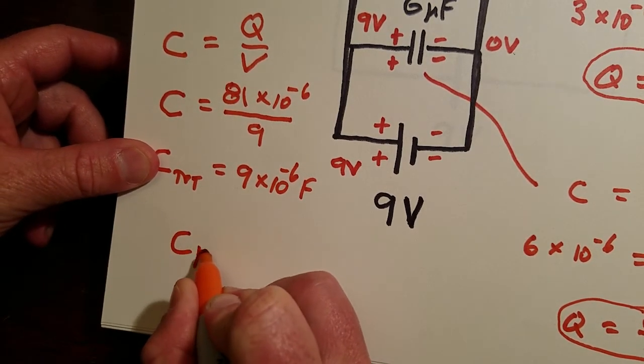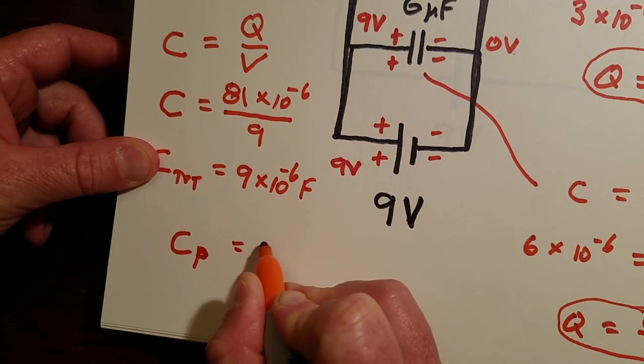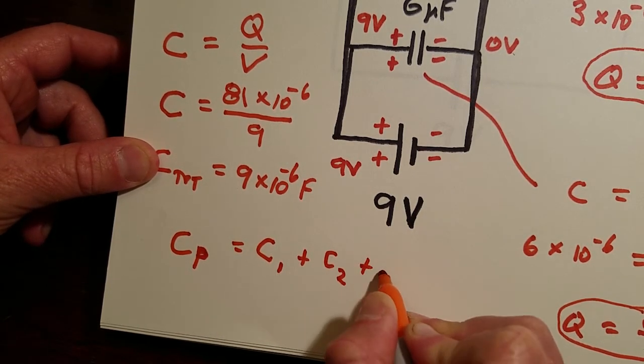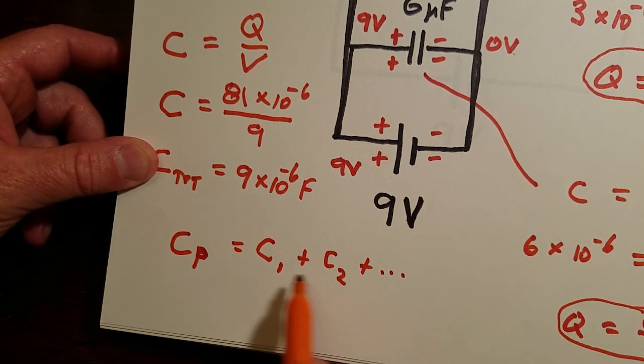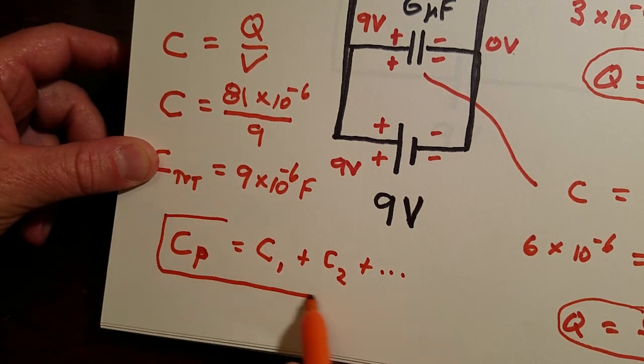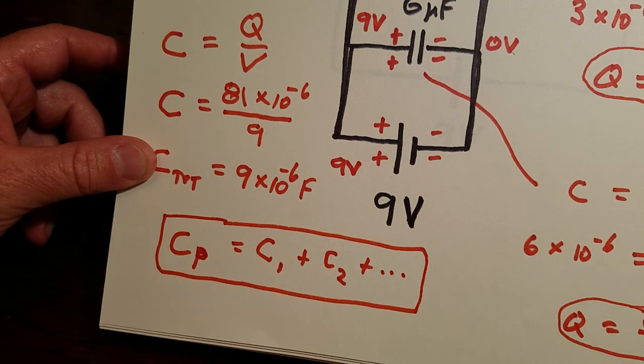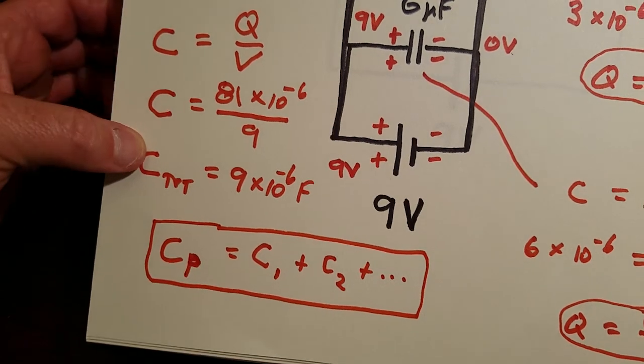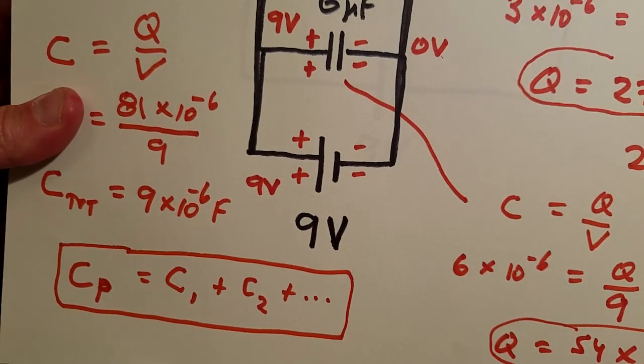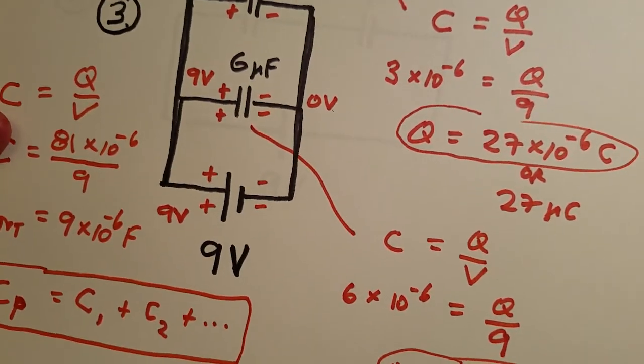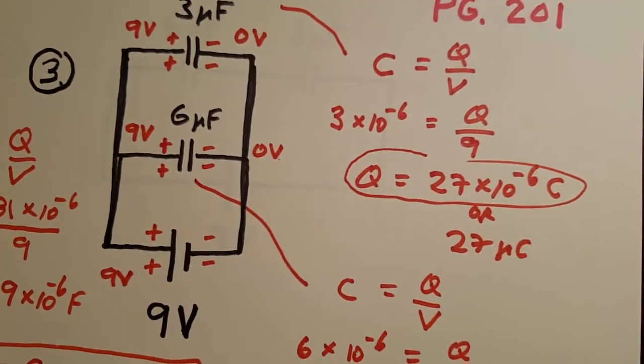So something to note on this problem that's true in general is for capacitors in parallel, C with a sub P on there, the way you get the total is you just add them up: C1 plus C2 plus dot dot dot. You notice capacitors in parallel add like resistors in series. They act the opposite to the way that resistors act. Okay, so that's how you handle capacitors in parallel. This actually turns out to be the most straightforward of the two cases.